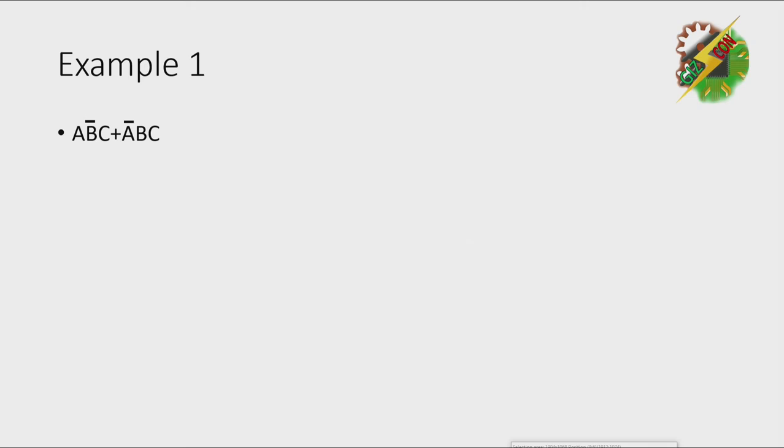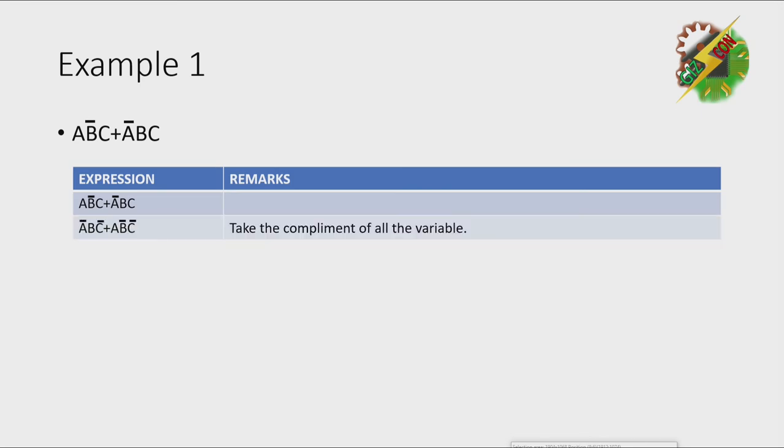Example 1. AB̄C + ĀBC. Let's take the DeMorgan's Theorem formation for this expression. First step, take the complement of all the variable.